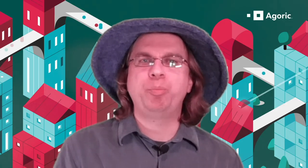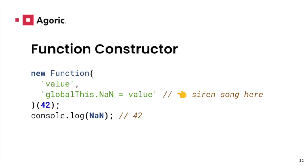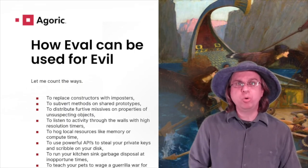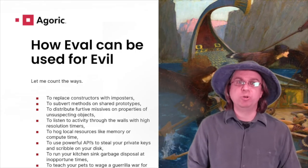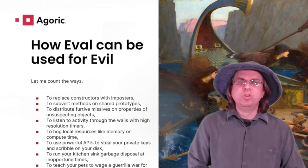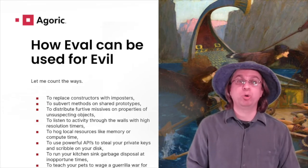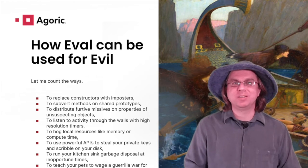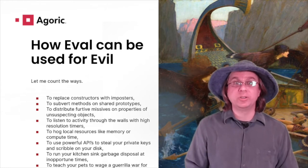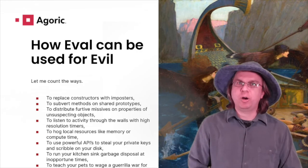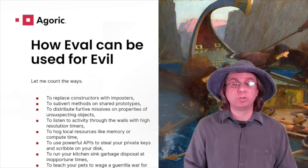The subtle eval is the function constructor, which compiles a program and runs it in a closure scope parented on global scope. In this case, the siren song sets NaN to a very special number, just like real NaNs. Eval can be subverted in many ways, mostly by exploiting the pervasive mutability of the JavaScript environment. The web has benefited tremendously from that pervasive mutability. It is this malleability that has allowed JavaScript to grow as a language. Notably, shims are programs that anticipate new features and patch them into global scope.